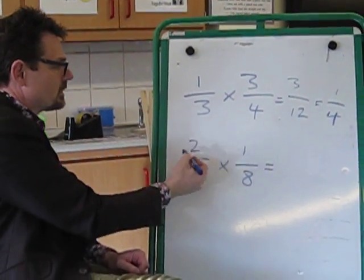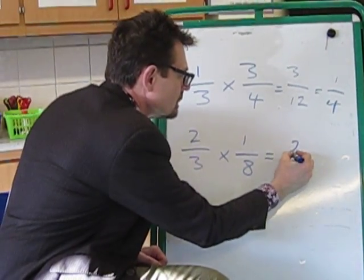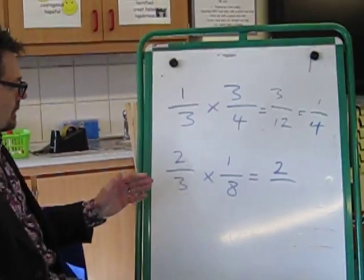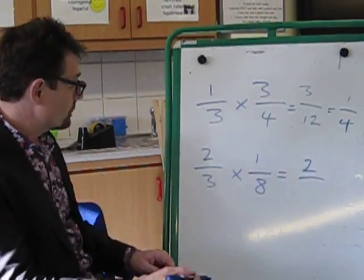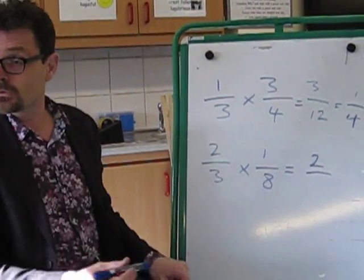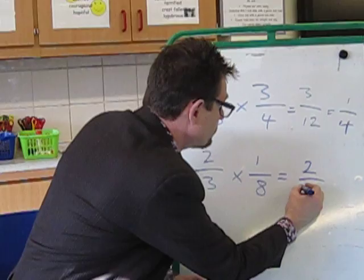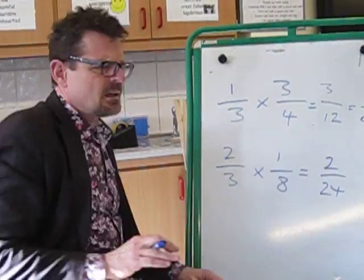Multiply the numerator together: 2 times 1 equals 2. Multiply the denominator together: 3 times 8 equals? 24.